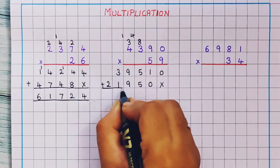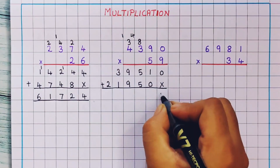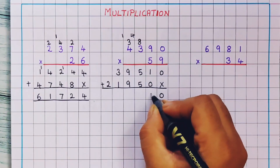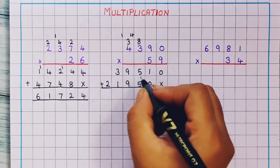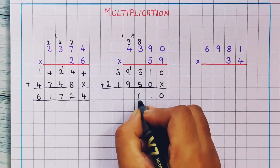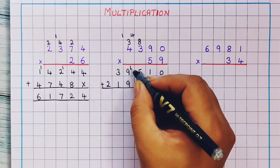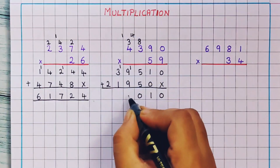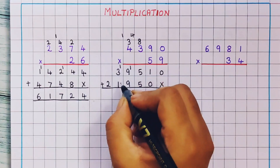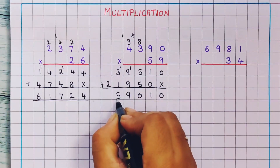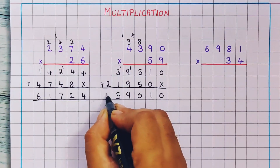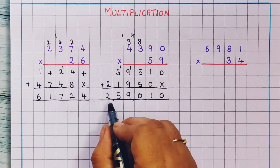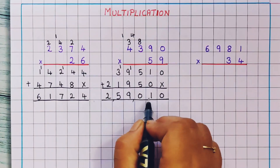Now I will do the addition of these 2. Here it is 0 because 0 plus nothing is 0. 1 plus 0 is 1. Then 5 plus 5 is 10, so 1 I will write here and 0 here. Now 1 plus 9 is 10, 10 plus 9 is 19. 3 plus 1 plus 1 is 5. And here 2. So the answer is 2,59,010.